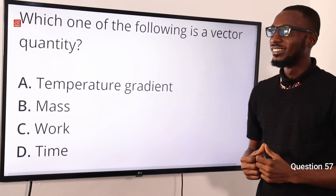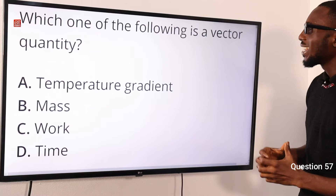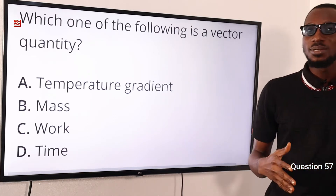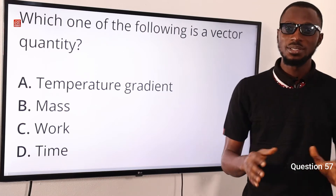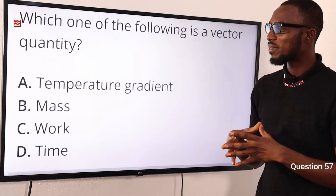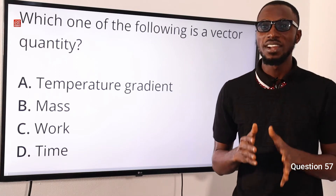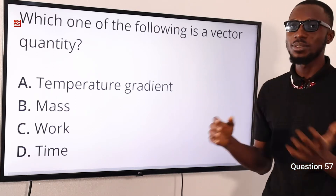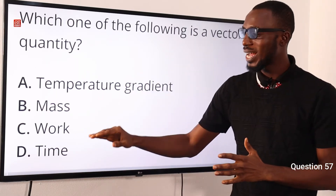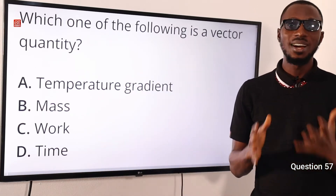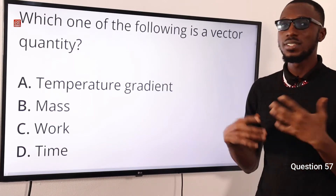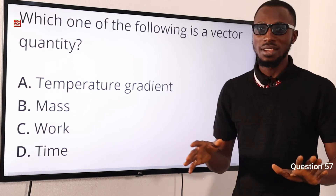Question 57: Which of the following is a vector quantity? When we talk about vector quantities, they have magnitude or size and direction. Looking through the options provided, mass, work, and time are actually scalar quantities. Other examples of scalar quantities include length, speed, and distance.